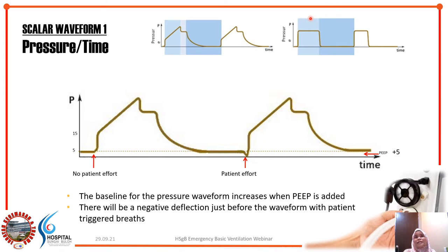You can also learn if the patient is breathing on their own. A negative deflection at the beginning of the breath means the patient is triggering the breath. This is good news if the patient has a CNS problem, as it shows they are initiating breaths. However, it can also signal insufficient sedation if deep sedation is required, so it depends on the clinical situation.